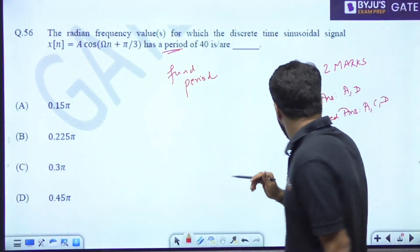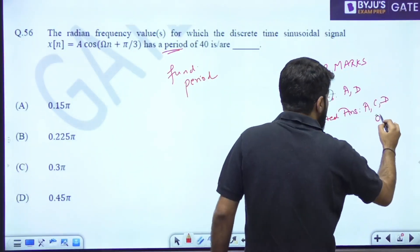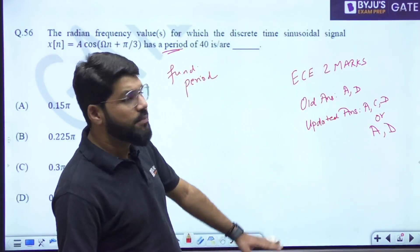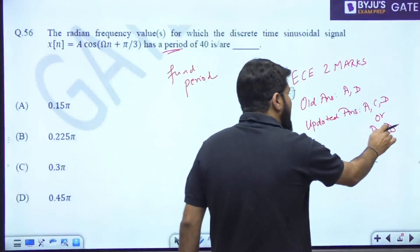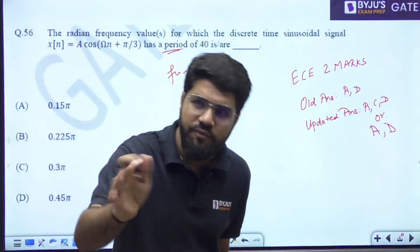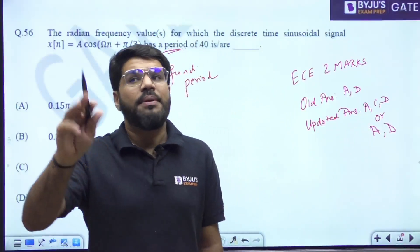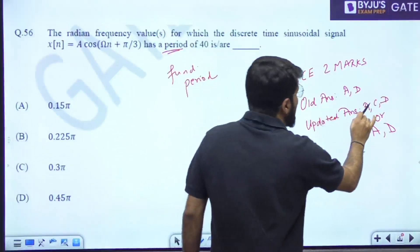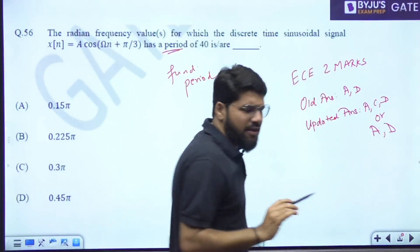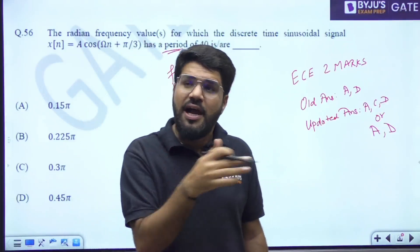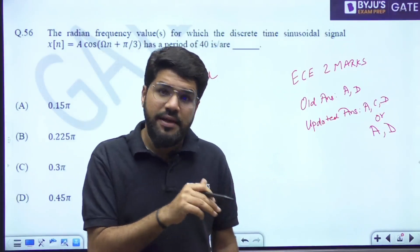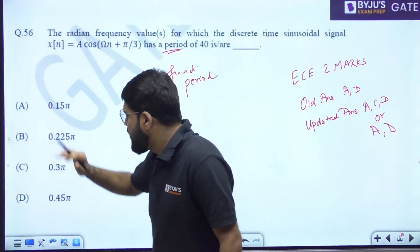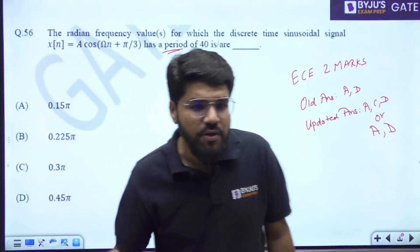Now here, what they have told, updated answer is ACD or AD. I mean, they have not even updated to ACD. They have told whether you have marked AD - because period means by default fundamental period also, that is also correct. But somebody has taken period as any integral multiple of fundamental period where they have marked. So whether you have chosen ACD or AD, you get the marks. But if you have not attempted here, marks to all. At least here, if you have not attempted, somebody marked B or something like that, then he doesn't get any marks. Negative, because MSQ question.